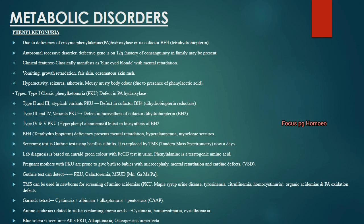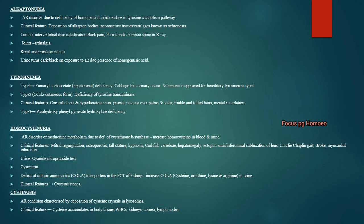Alkaptonuria is autosomal recessive, due to deficiency of homogentisate oxidase in the tyrosine catabolic pathway. Clinical features include deposition of alkapton bodies in connective tissues and cartilages (ochronosis), calcification of lumbar intervertebral discs causing back pain, bamboo or parrot beak spine on X-ray, arthralgia, renal and prostatic calculi, and dark or black urine on air exposure due to homogentisic acid.